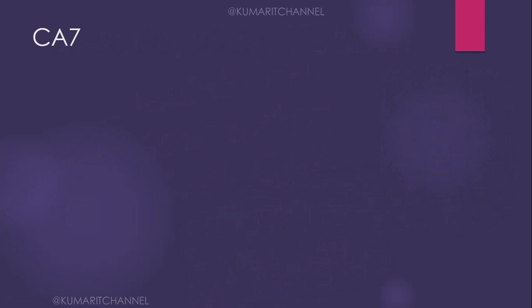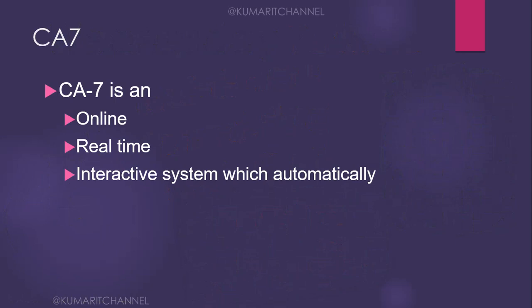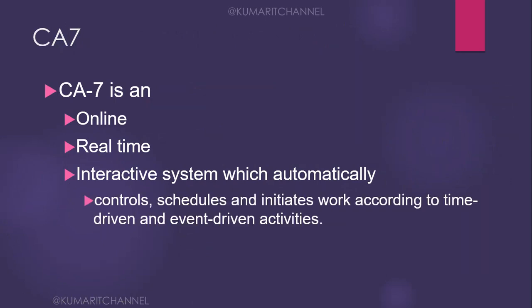First, let's understand what CA7 is and why it is used. CA7 is an online real-time interactive system which automatically controls, schedules, and initiates work according to time-driven and event-driven activities. You have a set of mainframe jobs which you want to schedule either based on time or event. Apart from CA7, there are other scheduling tools available, but today my focus is completely on CA7.